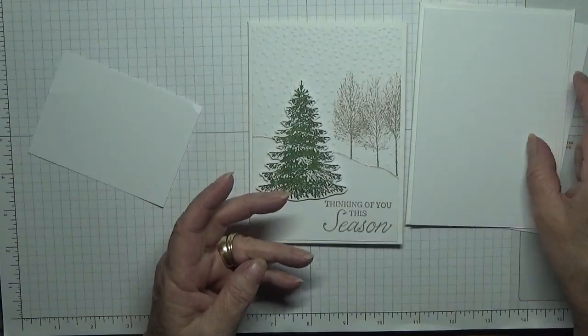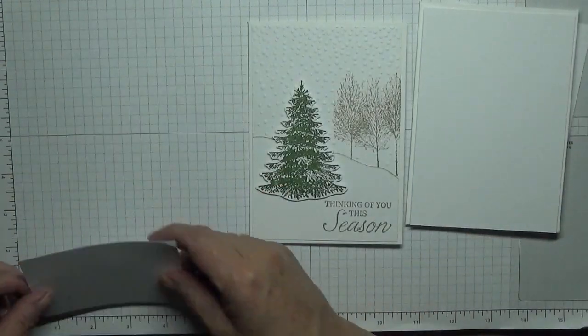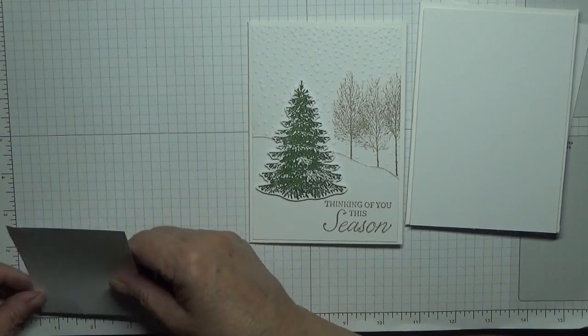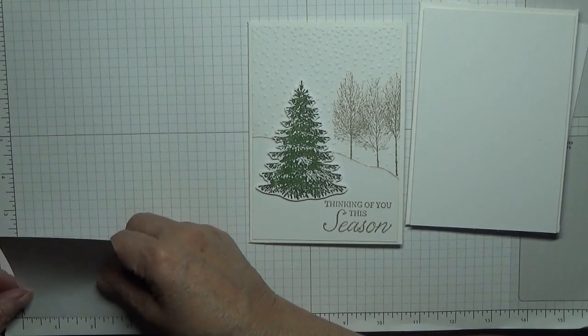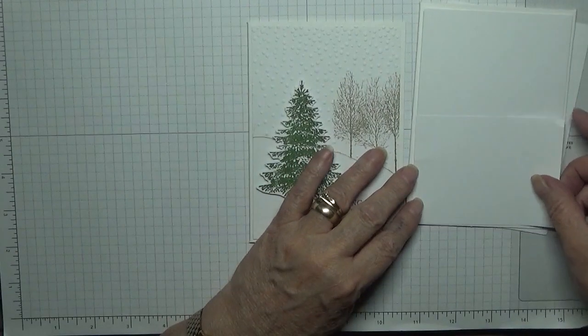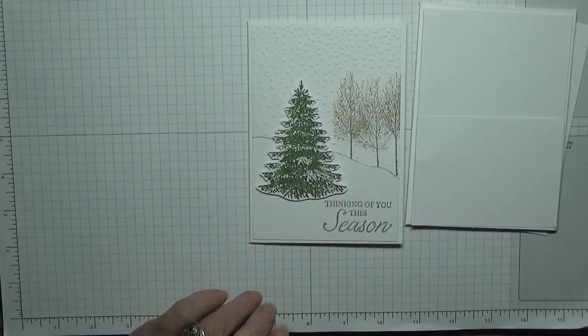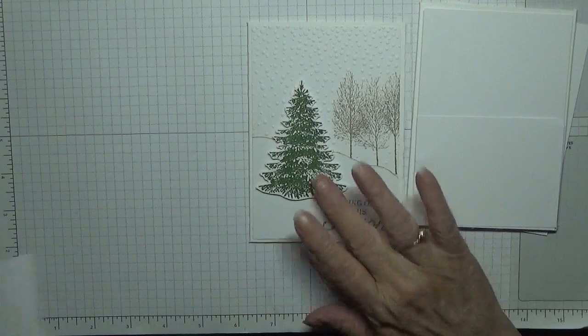Two pieces of white cardstock at five and five-eighths by three and seven-eighths, one for the middle and one for the top and then another piece of cardstock at three and seven-eighths by roughly three inches. And I've got a scrap for the tree.